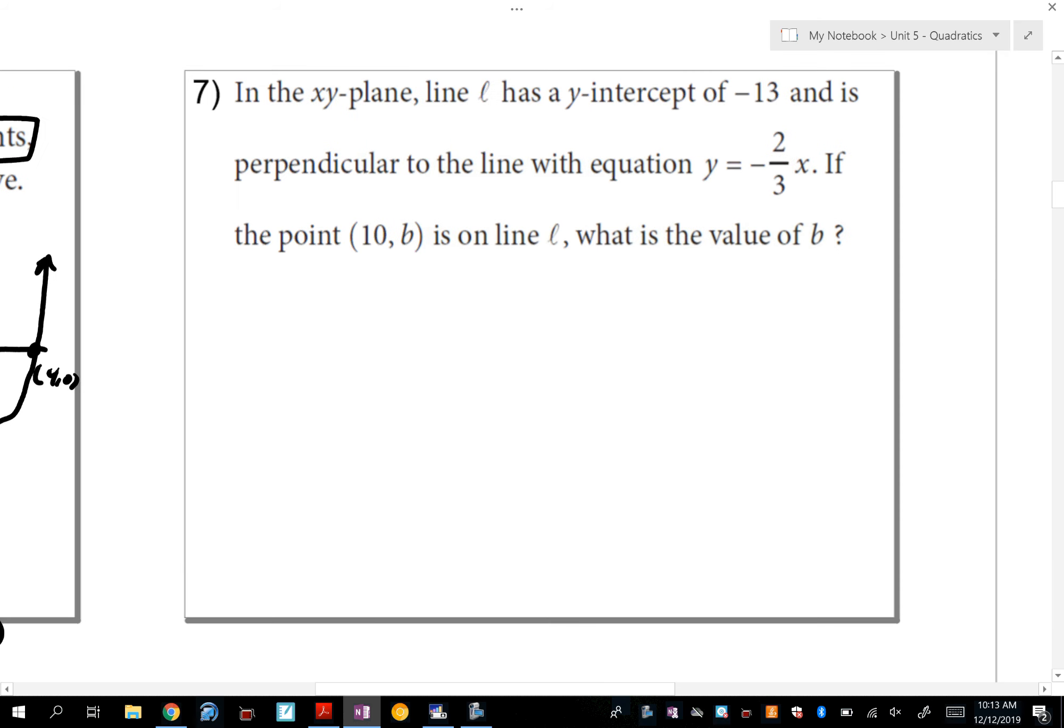Let's do number 7. Number 7 says in the xy plane, line L has a y-intercept of negative 13 and is perpendicular to the line with the equation y equals negative 2 thirds x. If this point 10 comma b is on line L, what is the value of b? Well, in the first sentence, you're given a y-intercept for a line, and you're given information about a line that's perpendicular to this line L. So I'm going to write down first the slope-intercept form for line L. So here's line L, slope-intercept form. It gives me a y-intercept. That y-intercept is negative 13. So I replaced b with negative 13.